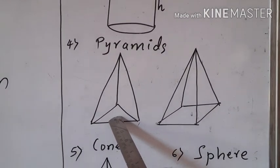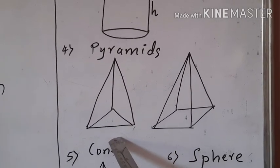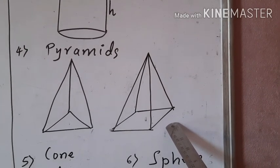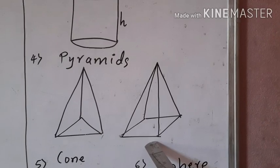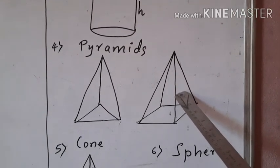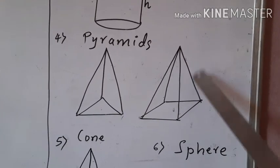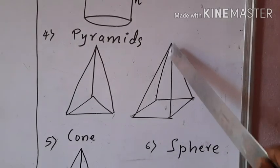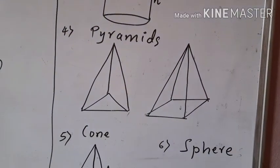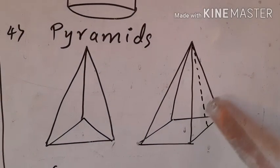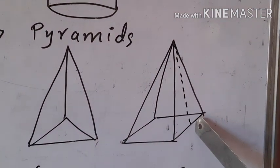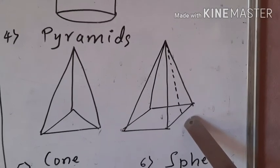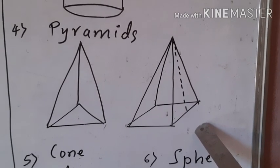Now I come to pyramid. A pyramid has a polygon-shape base and its lateral surfaces are triangle-shaped. It is also a 3D shape. In a square-based pyramid, the base is square with all 4 sides equal, and its lateral surfaces are triangle-shaped. The dotted line shown here is the slant height of the pyramid. Such a figure with a square-shaped base and triangle-shaped lateral surfaces is called a pyramid, and it is a 3D shape.